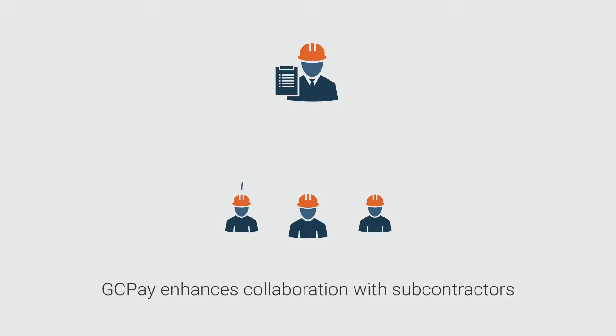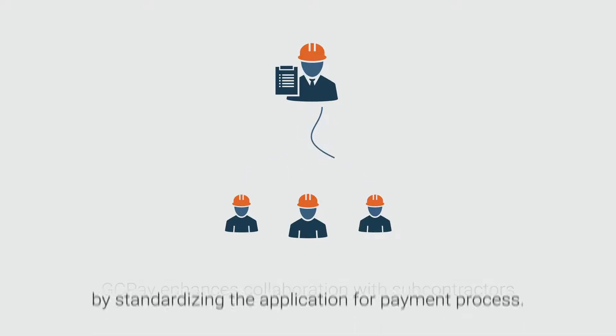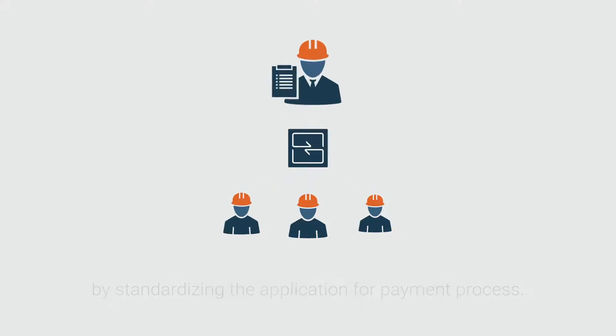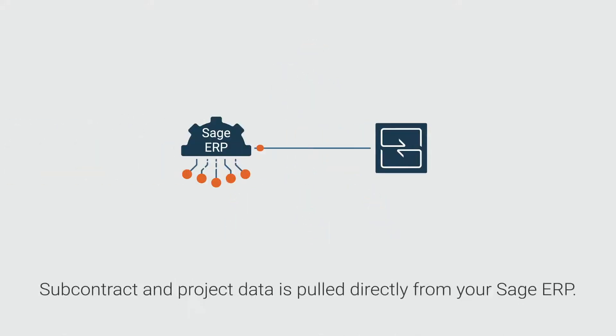GCPay enhances collaboration between general contractors and subcontractors by standardizing the application for payment process. GCPay pulls project data and subcontracts directly from your integrated ERP, eliminating double entry and ensuring accuracy.